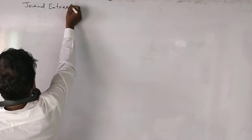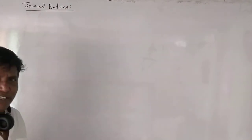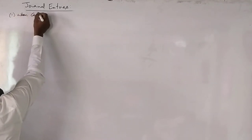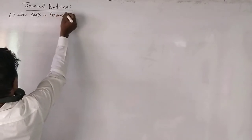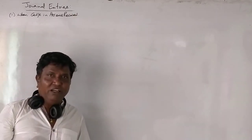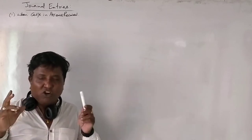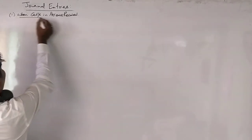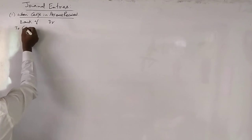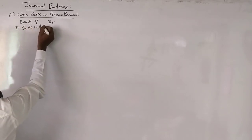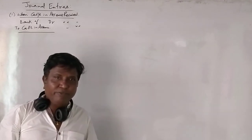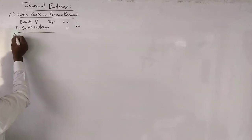The first journal entry we pass is when calls in arrears are received. If any calls in arrears money is pending and the company is receiving that money, then we need to pass an entry: bank account debit to calls in arrears account. This is the first general entry we need to make.